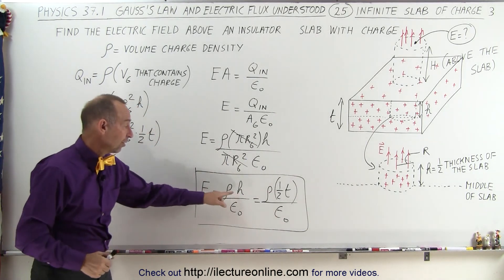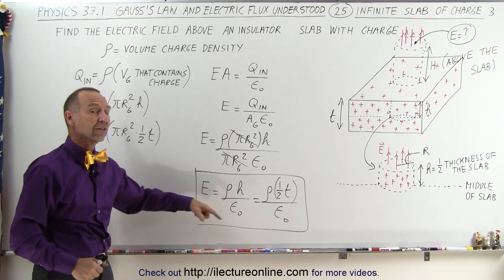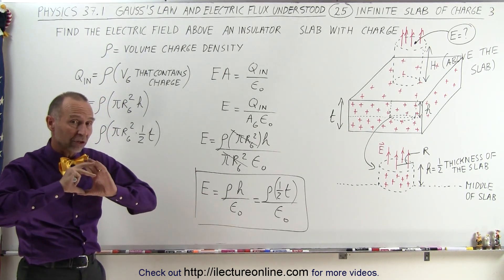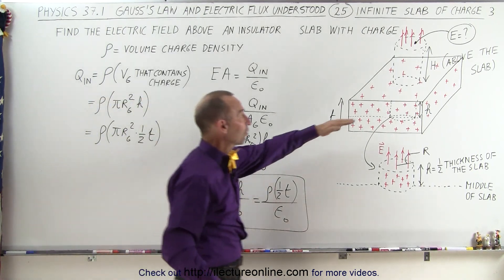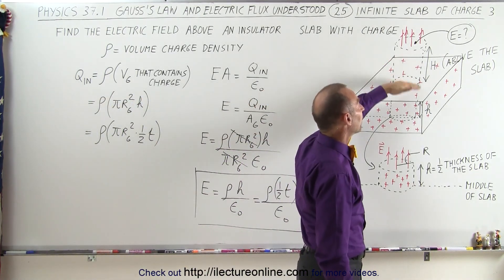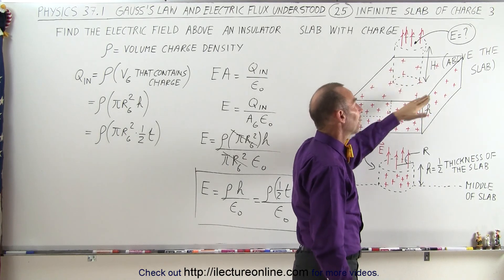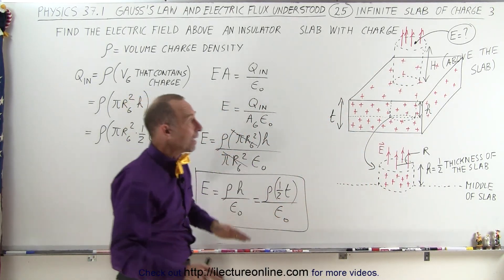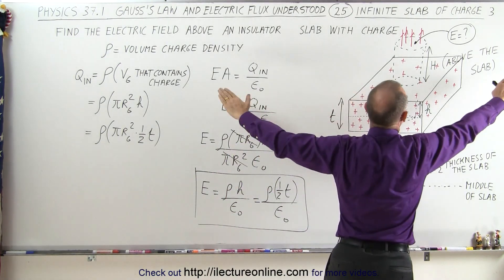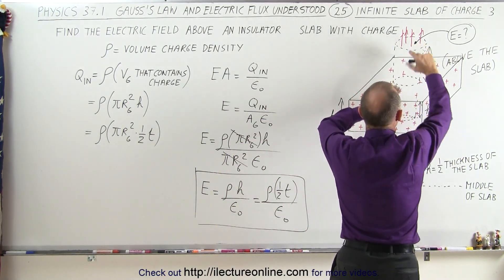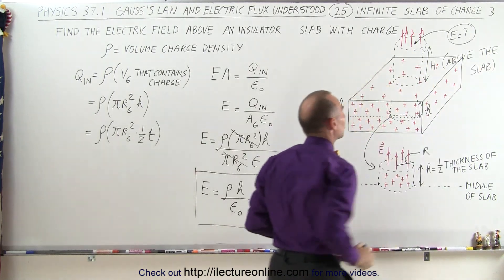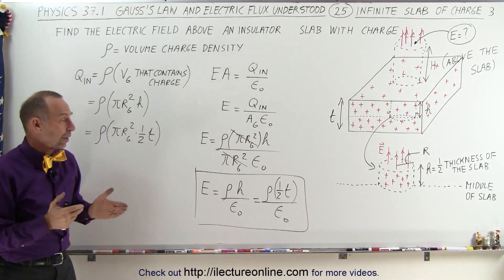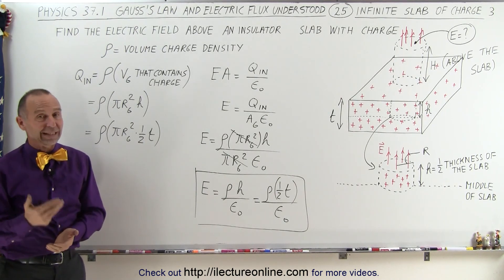H is a constant, the charge density is a constant, and epsilon sub-naught is a constant. We notice again that with a slab of charge where charge is distributed throughout, the strength of the electric field above the slab depends only on the charge density, and not on the distance away from the charge — as long as the slab is large enough to be considered virtually infinite and the distance above the slab is small compared to the size of the slab. If that's true, this will be the strength of the electric field away from the slab.